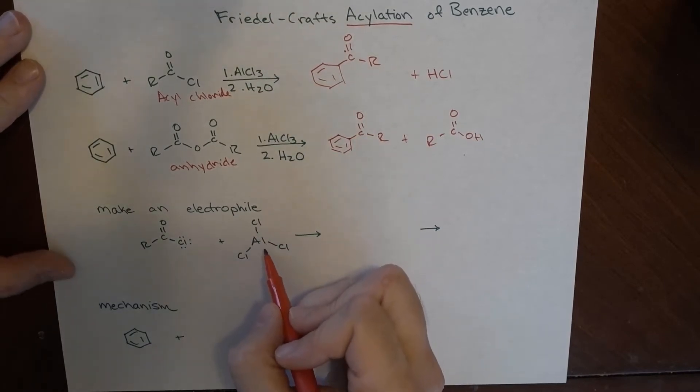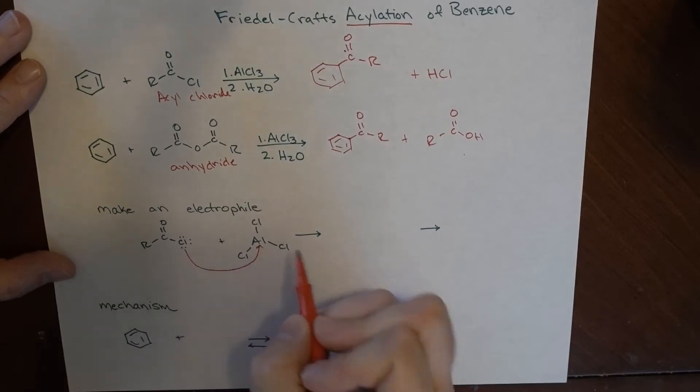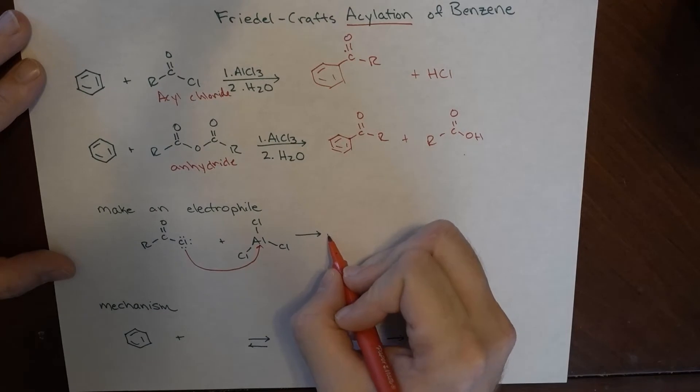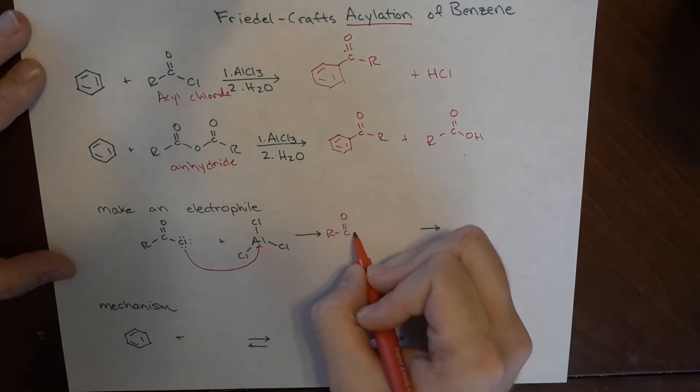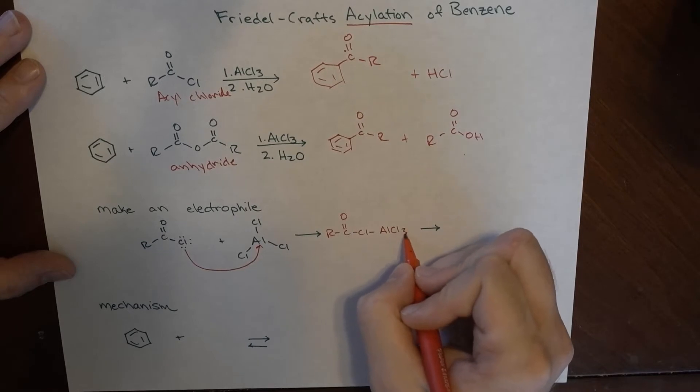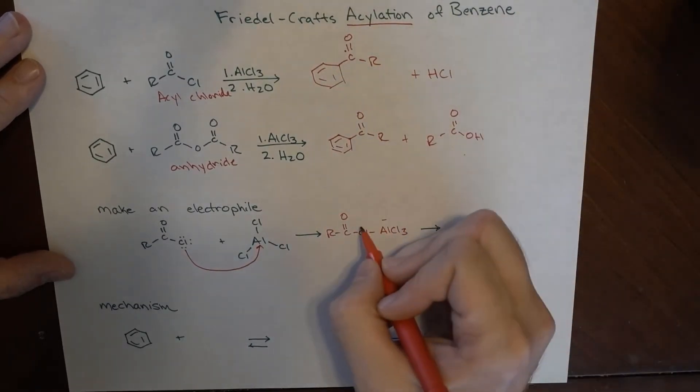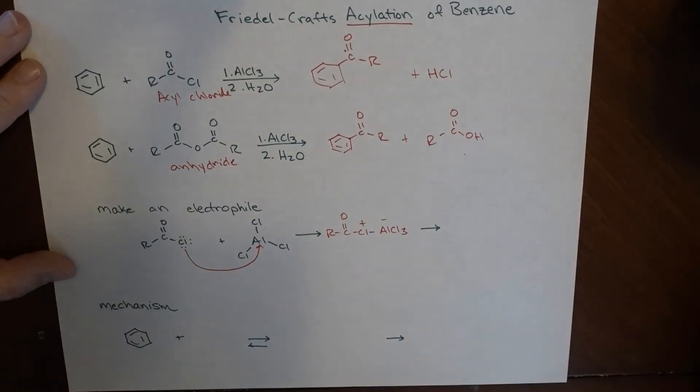So what ends up happening is it will end up grabbing on electrons from this which will help fill this species. And so what we'll have here is this R-C double bond O-Cl which is attached to this AlCl3. This has a slightly negative charge because it's just got some electrons. This has a positive charge because it just gave them.